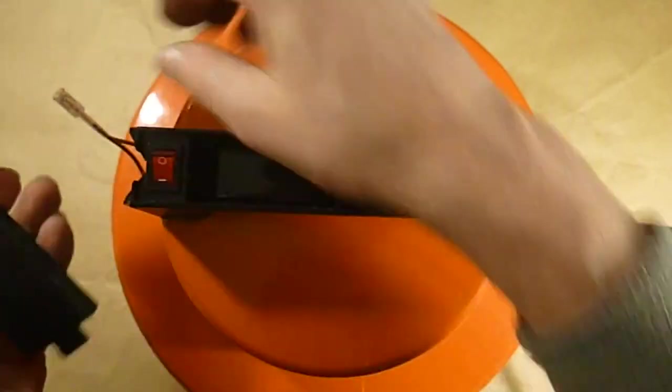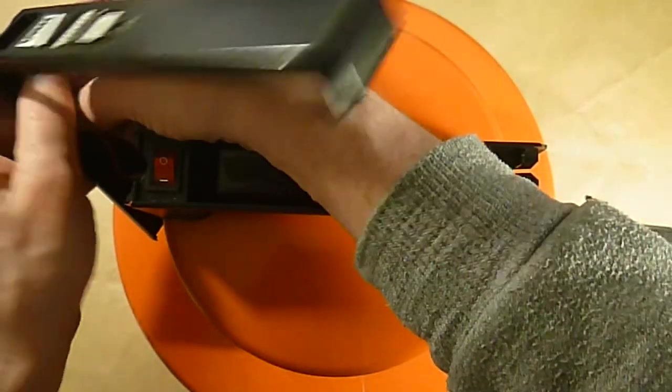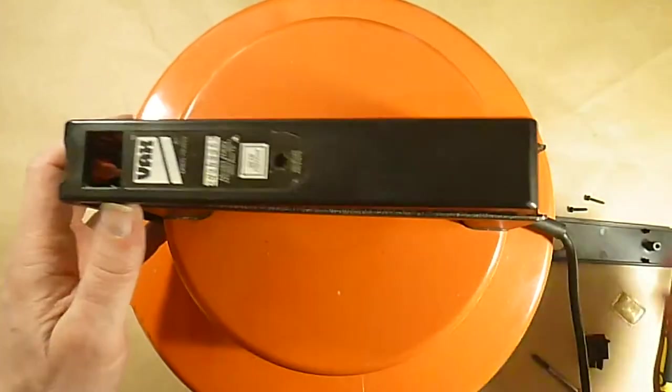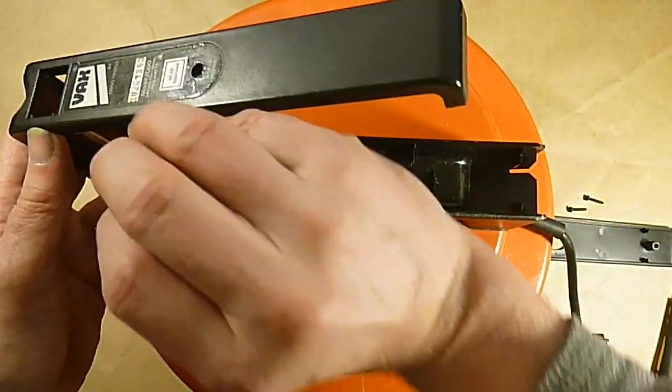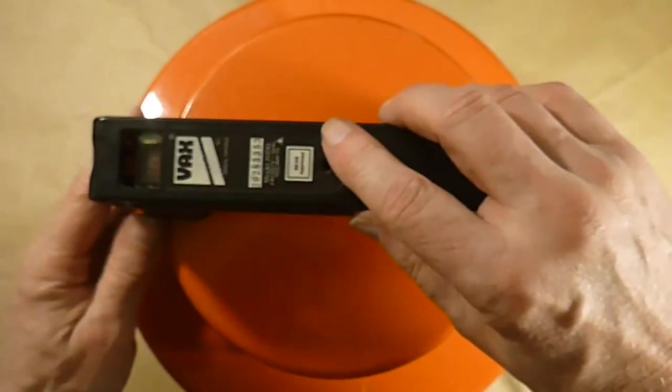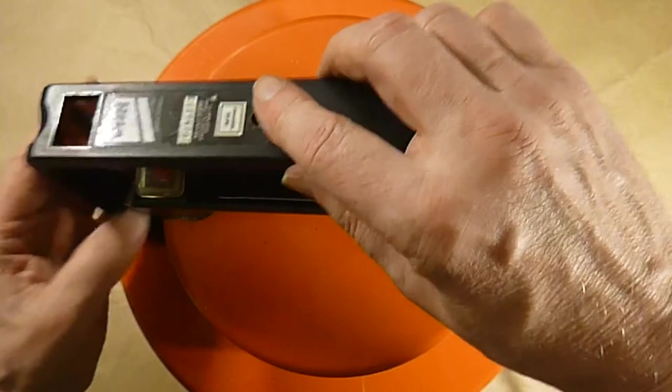There's a little clip on the front there for the light. Flip that back on. Don't forget the little rubber cover over the switch.